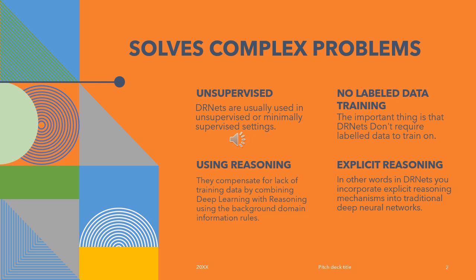On one side, we don't train on data, so we have to compensate for that by using reasoning. And the way we use reasoning is by using the rules pertaining to the particular domain. The domain information rules are used for reasoning. In other words, you're able to incorporate explicit reasoning mechanisms into traditional deep neural networks.